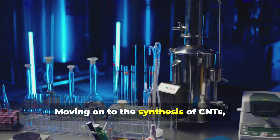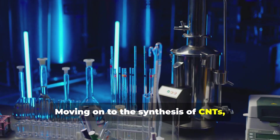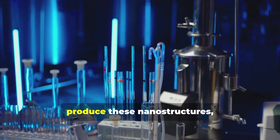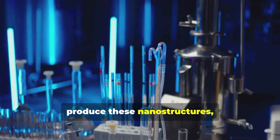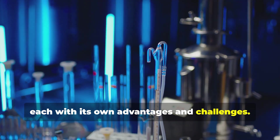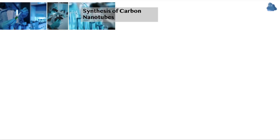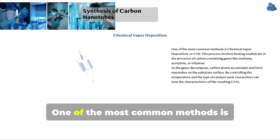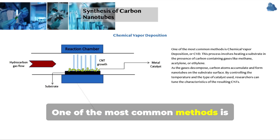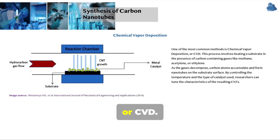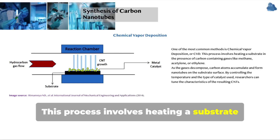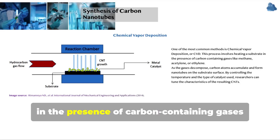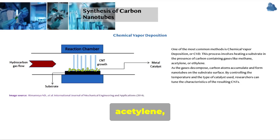Moving on to the synthesis of CNTs, there are several methods employed to produce these nanostructures, each with its own advantages and challenges. One of the most common methods is chemical vapour deposition, or CVD. This process involves heating a substrate in the presence of carbon-containing gases, like methane, acetylene or ethylene.